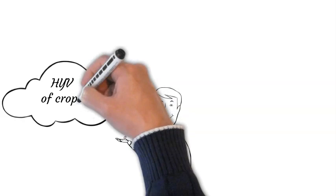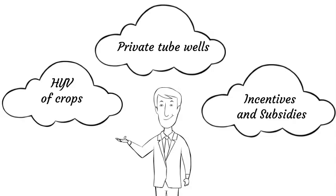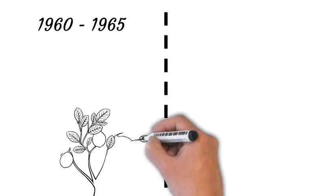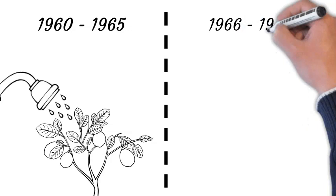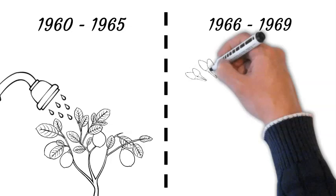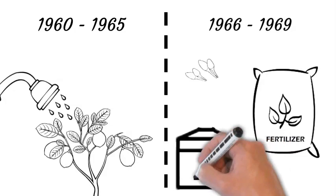The reasons for growth were high-yielding varieties of crops, installation of private tube wells, and increased incentives and subsidies on agriculture. The growth took place in two phases: from 1960 to 1965, growth was driven by increased irrigation facilities; and from 1966 to 1969, growth was driven by high-yielding variety seeds, chemical fertilizers, and pesticides. The complete package of water, pesticides, seeds, and fertilizers were the major reasons for growth in the agriculture sector.